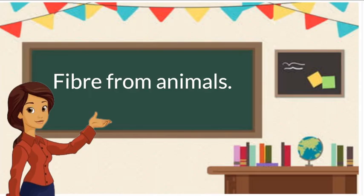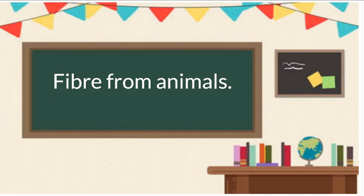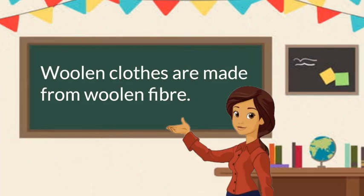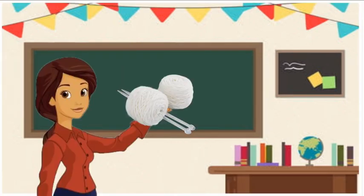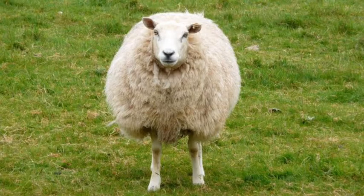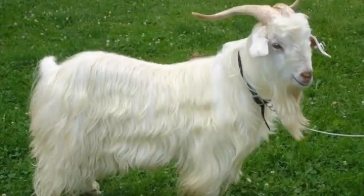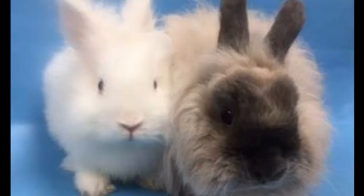Fibers from animals. Woolen clothes are made of woolen fibers. We get woolen fibers from animals like sheep, goat and rabbit.